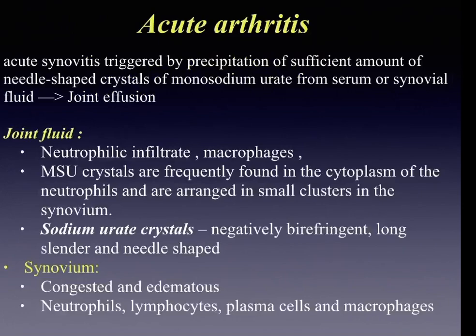Acute gouty arthritis is acute synovitis triggered by precipitation of needle-shaped monosodium urate crystals from serum or synovial fluid. The joint fluid is rich in neutrophilic infiltrate and macrophages, and monosodium urate crystals are found inside the cytoplasm of neutrophils and in small clusters in the synovium. These crystals are long, slender, needle-shaped, and negatively birefringent. Morphologic changes in the synovium show congestion and edema along with chronic inflammatory infiltrate.